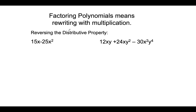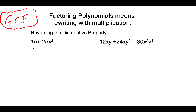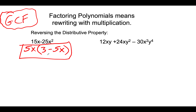Now we start out by factoring out the greatest common factor. The GCF will be the largest term that can factor all terms. In this case I'll take out a 5x. When I remove a 5x from 15x I'm left with 3; when I remove a 5x from minus 25x squared I'm left with minus 5x. You can always check your work by distributing back in: 15x minus 25x squared — good.